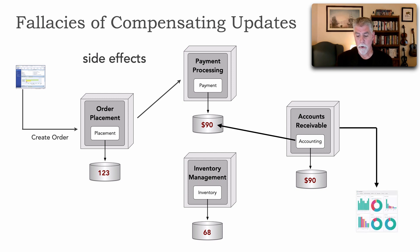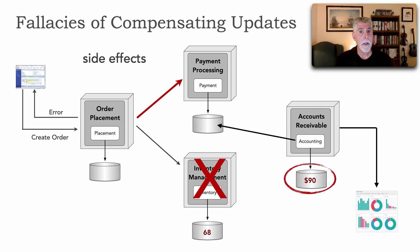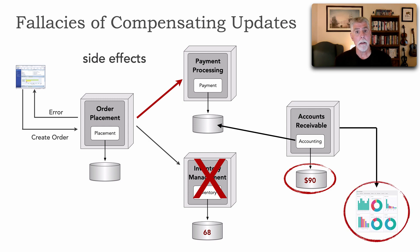Now inventory management needs to decrement, but we can't — there's something wrong, we get an error. We issue a compensating update. But the problem is we now pass back the error, and these are the side effects that can occur. Because we have a distributed transaction and applied a compensating update to payment, we had no idea that AccountsReceivable had already queried that information or directly accessed that table. Now that $90 is posted in a ledger. These are the side effects that can occur when we try to do reversals of transactions and don't know that other action has already been taken.